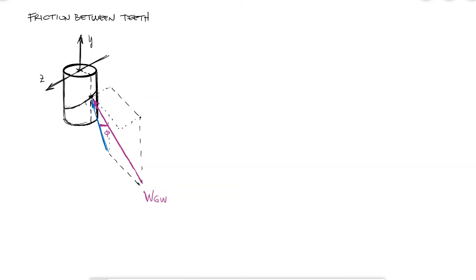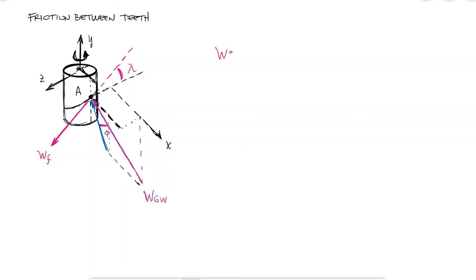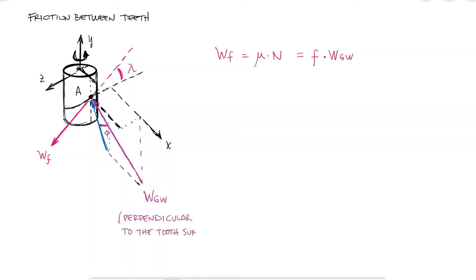The direction of these friction forces will be opposite to the movement of the worm and parallel to the teeth, which means the friction vector still makes an angle lambda with respect to the XZ plane. The value of this friction force W_F will be the friction coefficient times the normal — we'll keep using lowercase f for the friction coefficient — and the normal force is already the overall force W_GW, which by definition is perpendicular to that surface.